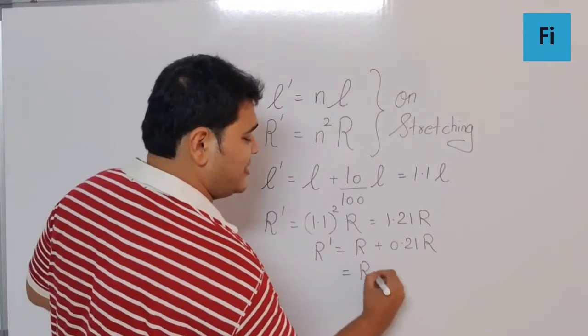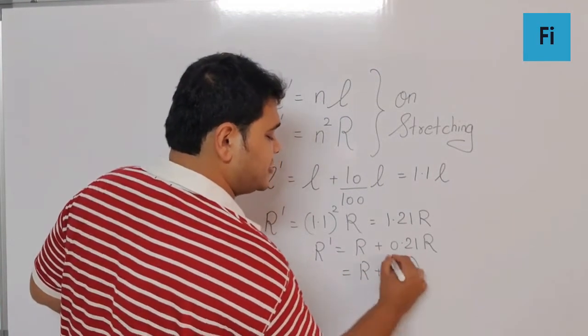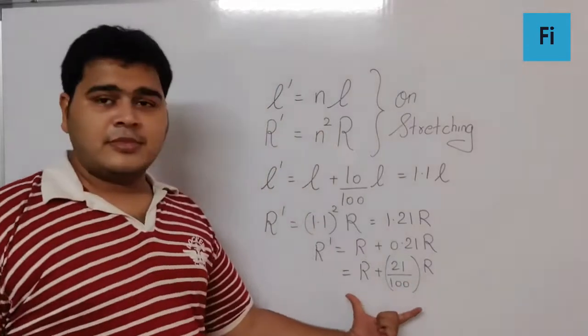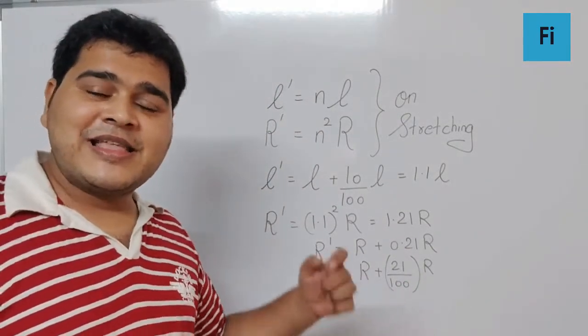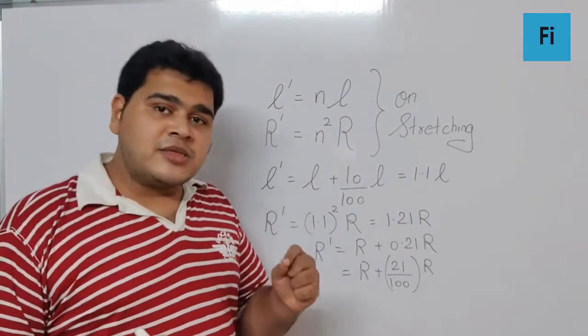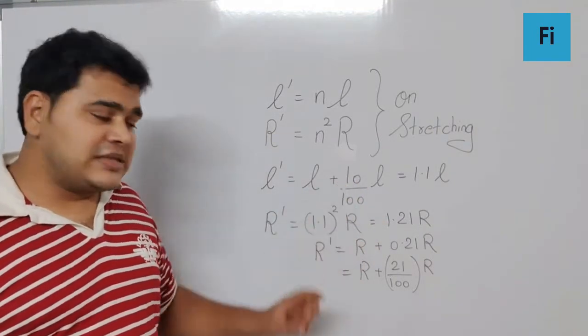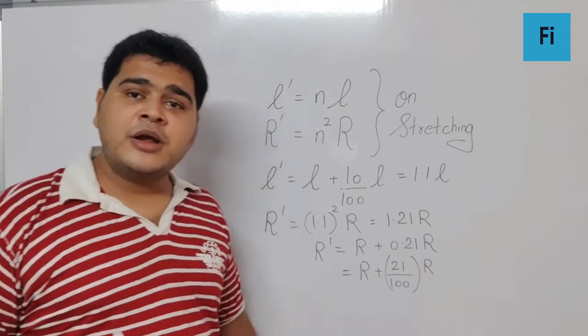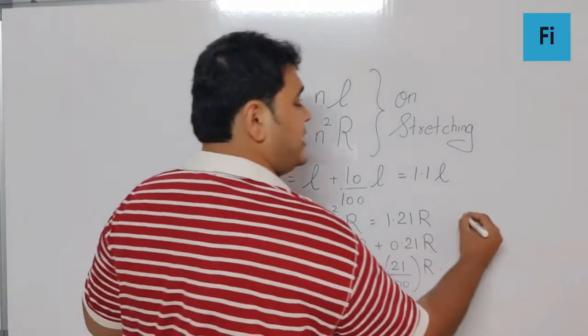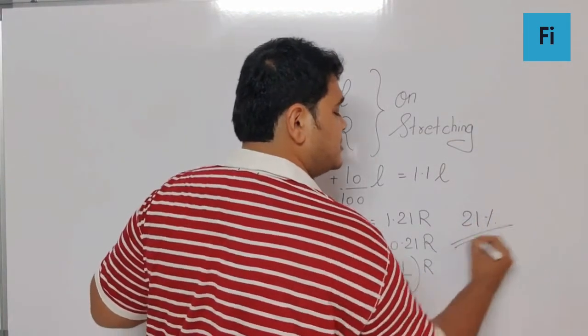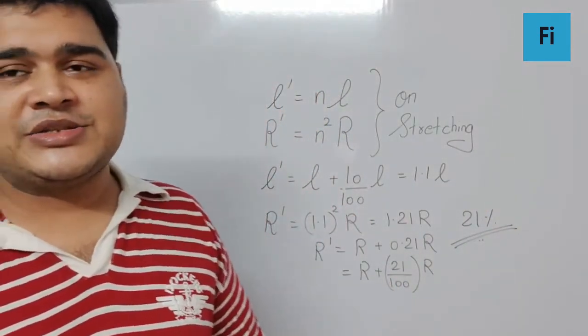Or I can write that as R plus 21% of R. I hope you are getting this - that means if the length of the wire increases by 10%, I can say the resistance of the wire will increase by 21%, and that will be our final answer.